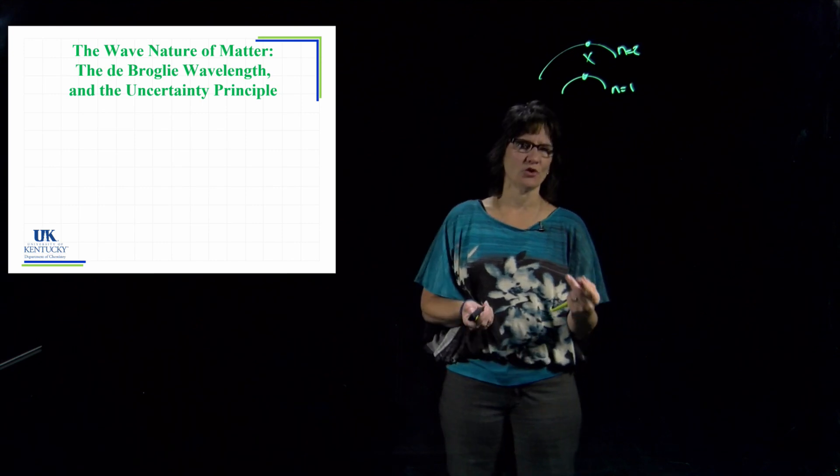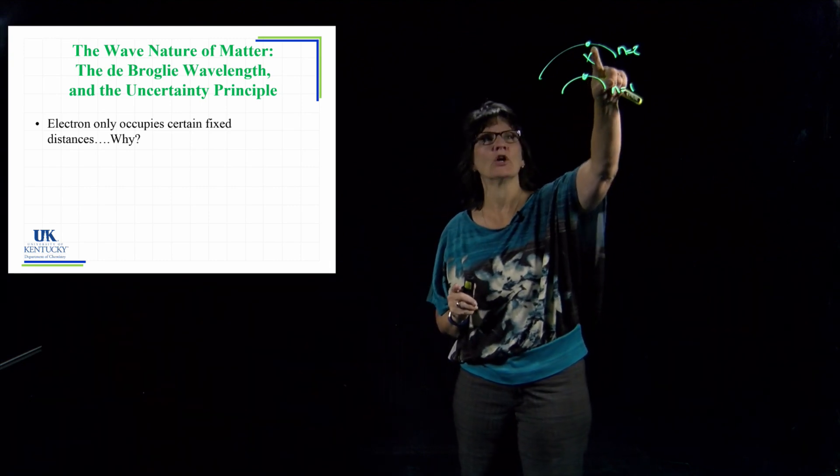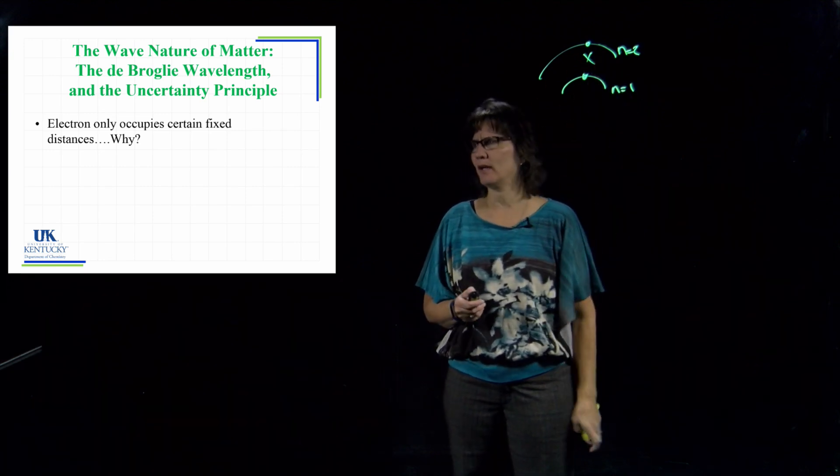What this is going to lead to by the end of this lesson is what we call the Heisenberg uncertainty principle, which really defines the nature of the electronic structure of an atom. So we're trying to answer why an electron can be here, an electron can be here, but it cannot be anywhere in between.